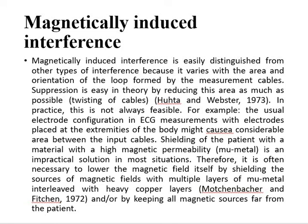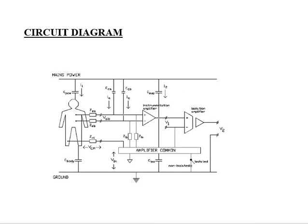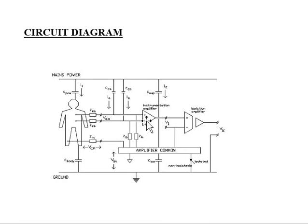Let us have a small glance at the final diagram. You can see the capacitance between the patient and the mains, and the capacitance between the patient and the ground — this is due to the current through the body. This shows the current between the amplifier. Magnetic interference is not shown in this diagram. Finally, there is the interference due to the cable. In the next class we are going to discuss how to reduce the interference.